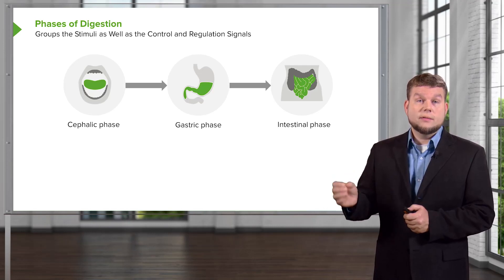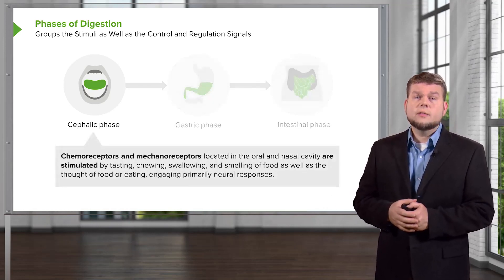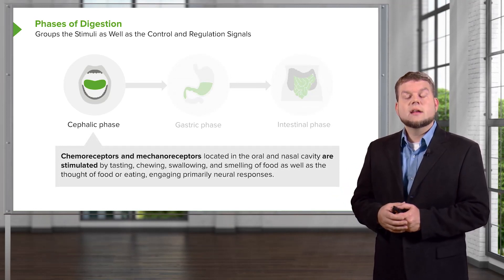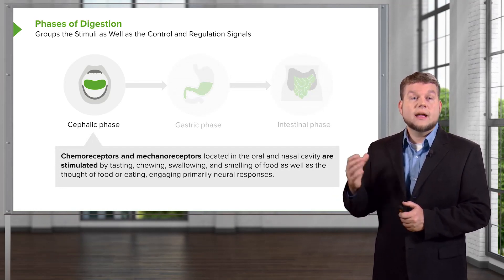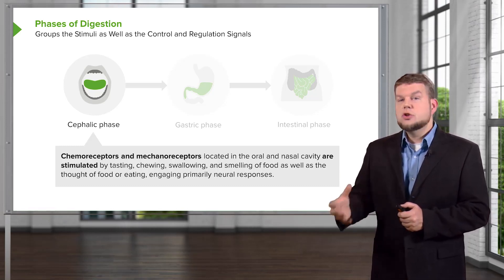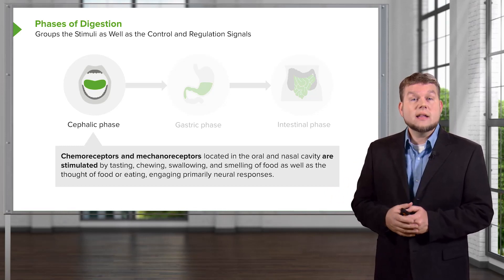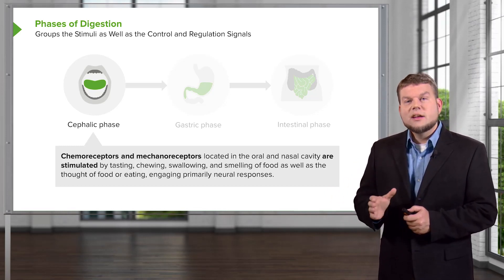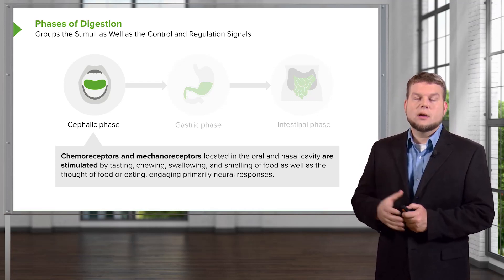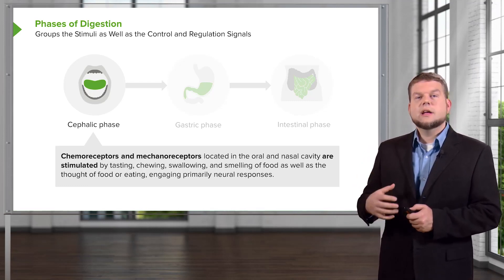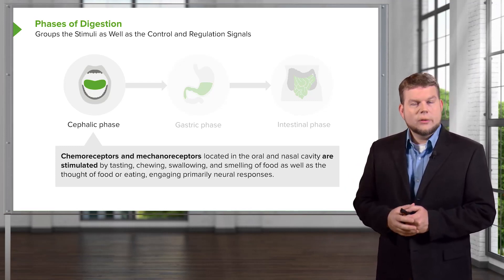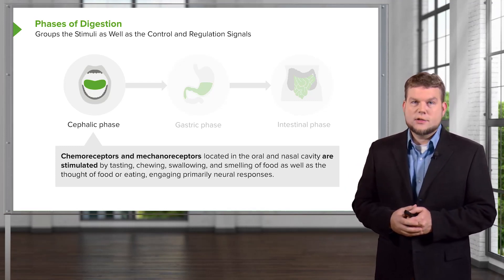The first is the cephalic phase. The cephalic phase involves chemoreceptors and mechanoreceptors that are located in both the mouth and the nasal cavity. These are enacted by things like tasting, chewing, swallowing, and even smelling of food. But you also start to enact the cephalic phase even by thinking about food — if you're hungry and starting to think about wanting to eat, the cephalic phase is already engaged and you're starting the digestion process.